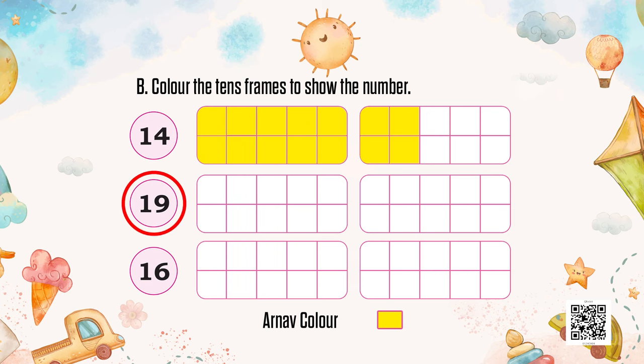Now, Arnav, for number 19, how can we represent that? In the first frame I will colour the full 10 boxes, and in the second frame I will only colour 9 boxes. So 10 and 9 makes 19. Amazing!